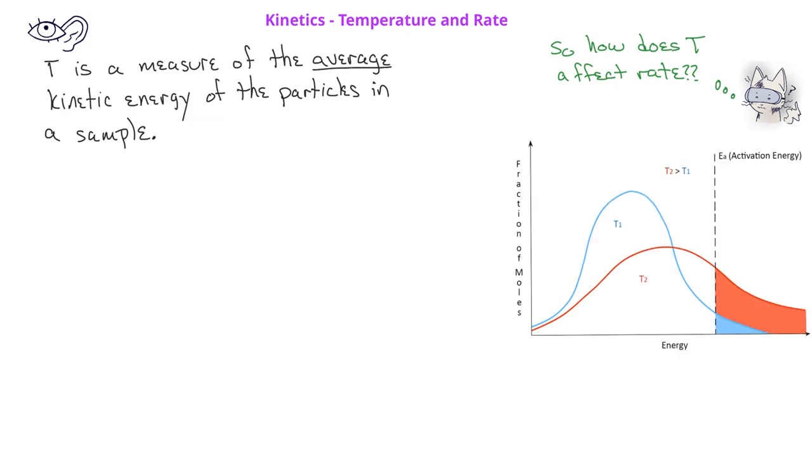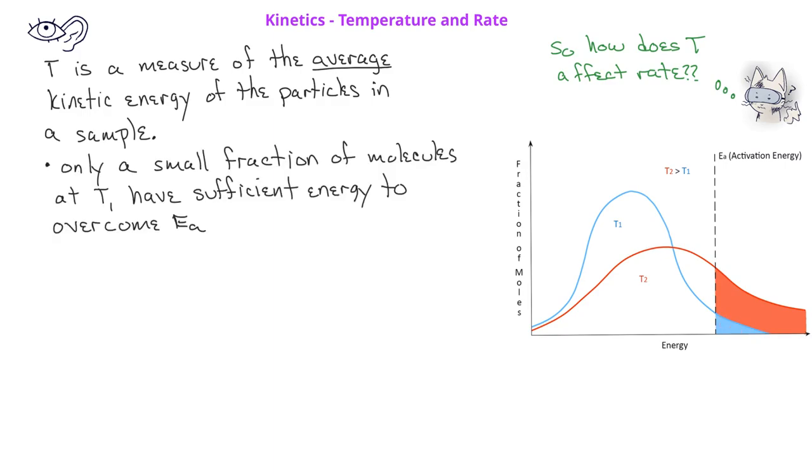In this figure, we see the distribution of molecules at a given temperature that have particular kinetic energies. At the first temperature, T1, in blue, we see that there is a particular distribution of energies. In this case, only a small fraction have enough energy to overcome the activation energy for a reaction to occur.